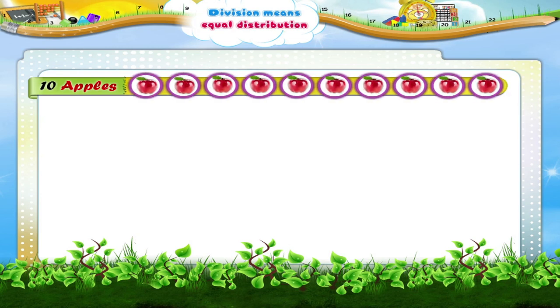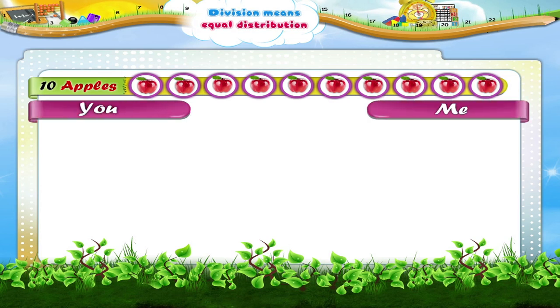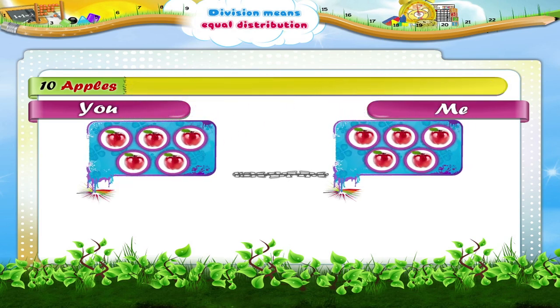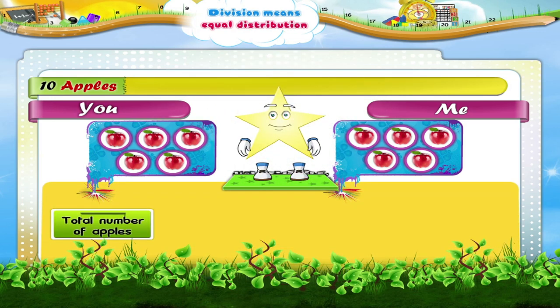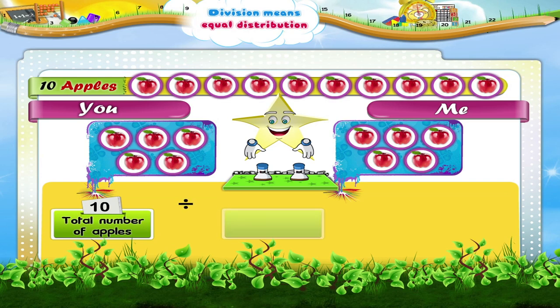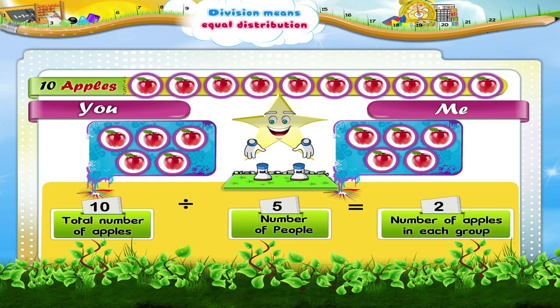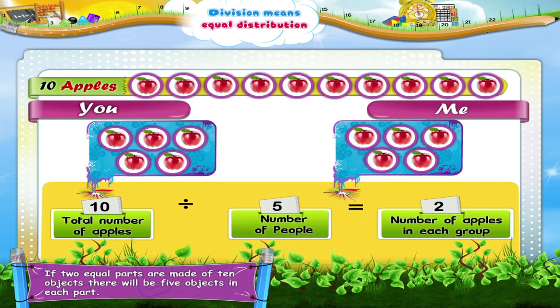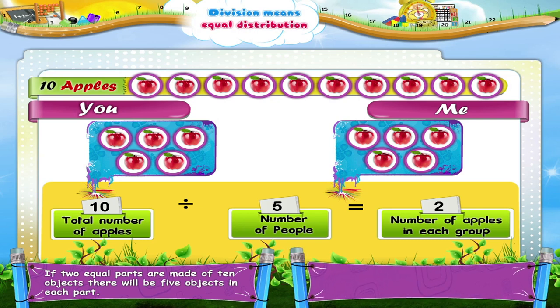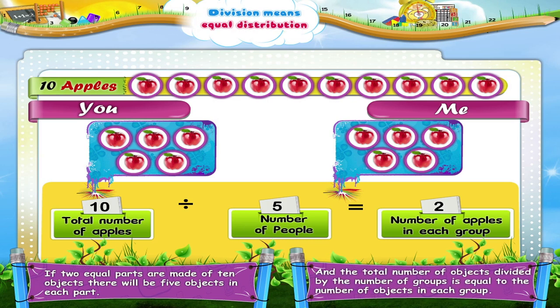Here are 10 apples. Suppose we want to divide them equally between you and me. Each one of us will get 5 apples each. So Starry, the total number of apples divided by the number of people is equal to the number of apples in each group. This means that if two equal parts are made of 10 objects, there will be 5 objects in each part. The total number of objects divided by the number of groups is equal to the number of objects in each group.